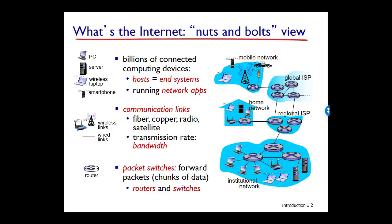Packet switching networks, which transport packets, are in many ways similar to a transportation network of highways and intersections. Consider, for example, a factory that needs to move a large amount of cargo to some destination warehouse located thousands of miles away. At the factory, the cargo is segmented and loaded into a fleet of trucks. Each of the trucks then independently travels through a network of highways and intersections to the destination warehouse.